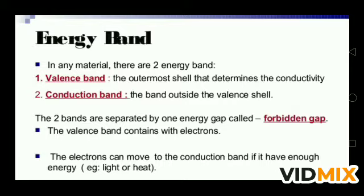At zero Kelvin, electrons fill the energy levels in the valence band starting from the lowest one. This band is always filled by electrons — it is the band of maximum energy. Electrons are not capable of gaining energy from an external electric field, so there is no flow of current due to such electrons. The highest energy level which can be occupied by an electron in the valence band at zero Kelvin is called the Fermi level.